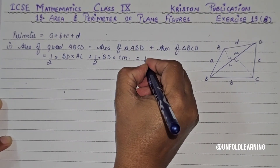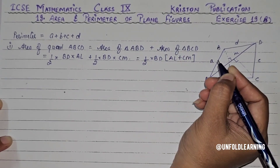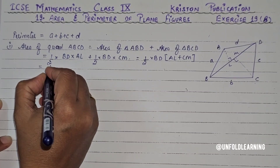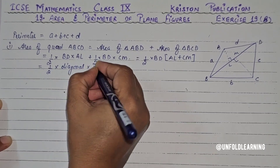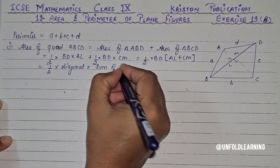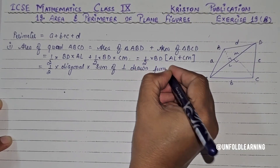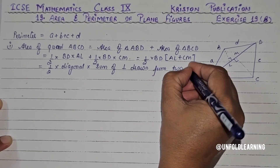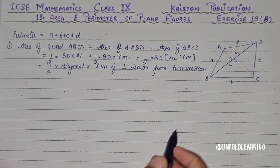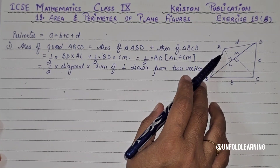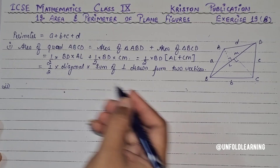Taking BD as common, the area formula simplifies to: area = 1/2 × BD × (AL + CM). In short, the area of a quadrilateral equals one-half times the diagonal, multiplied by the sum of perpendiculars drawn from the two opposite vertices to that diagonal.